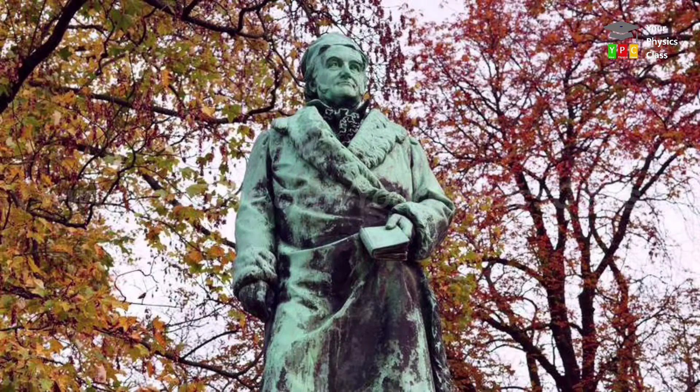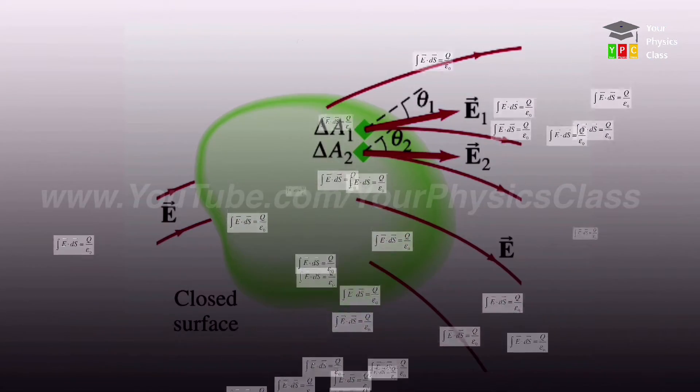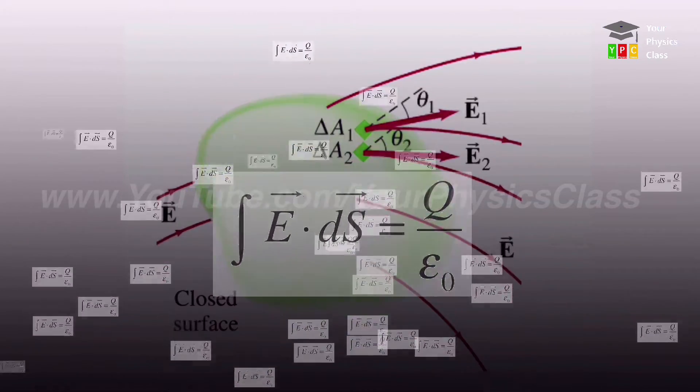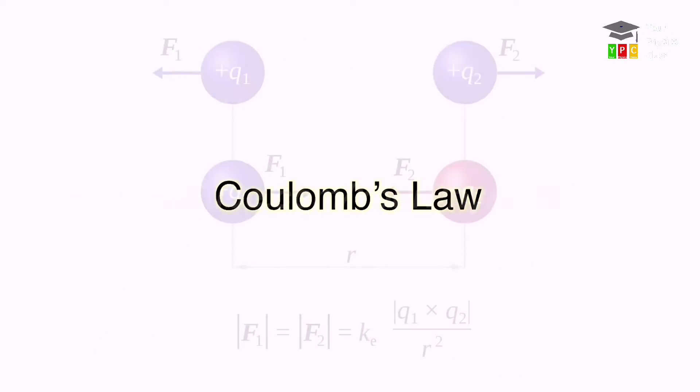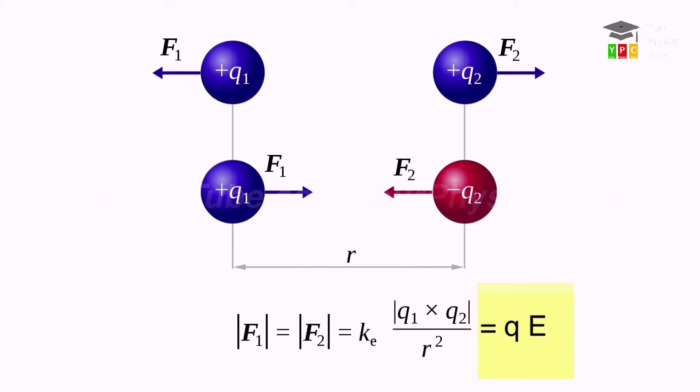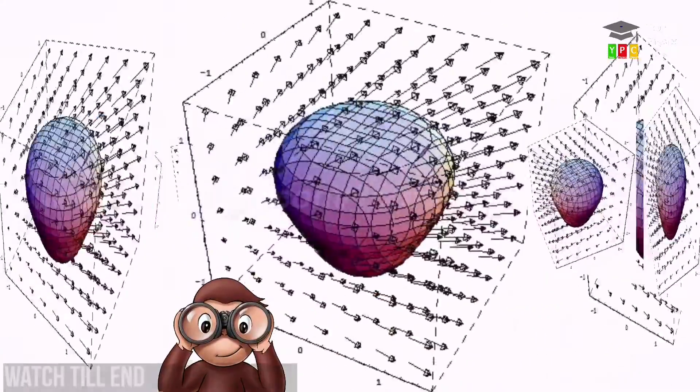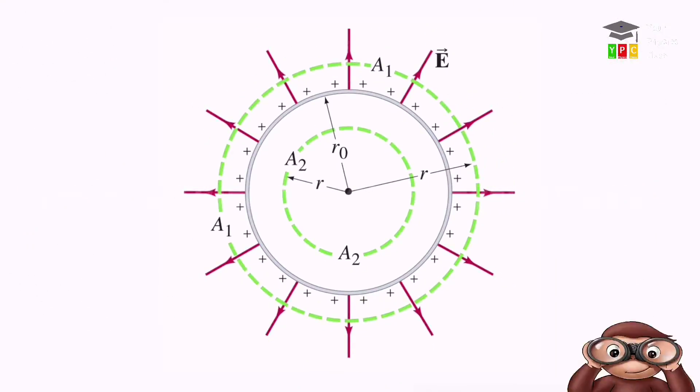Karl Friedrich Gauss, one of the greatest mathematicians of all times. Gauss explained the relationship between electric charge and electric field. Gauss Law - this law is analogous to Coulomb's law, because Coulomb's law also explained the relationship between electric charge and electric field. The Gauss law relates the values of field at closed surface and the total charge enclosed by that surface.